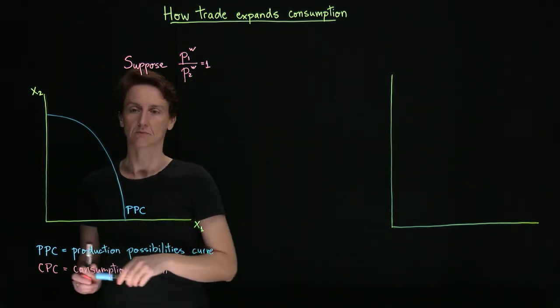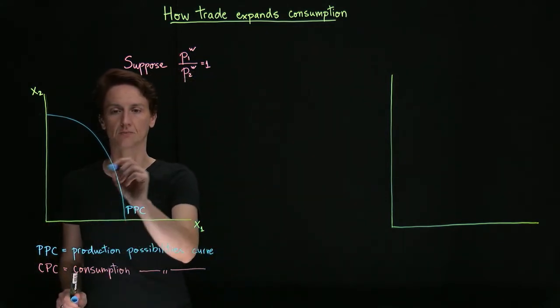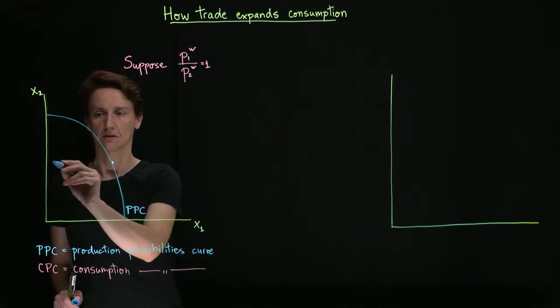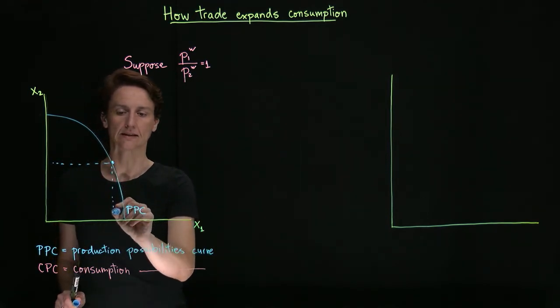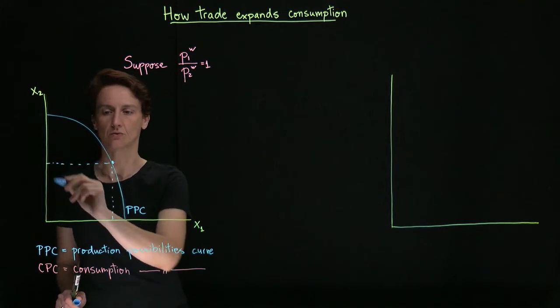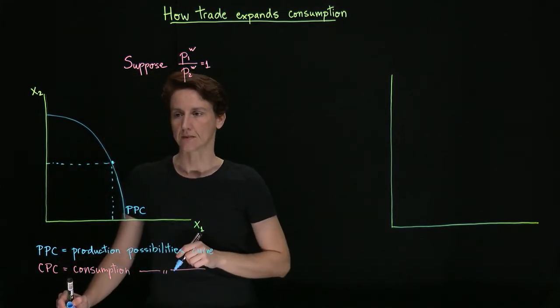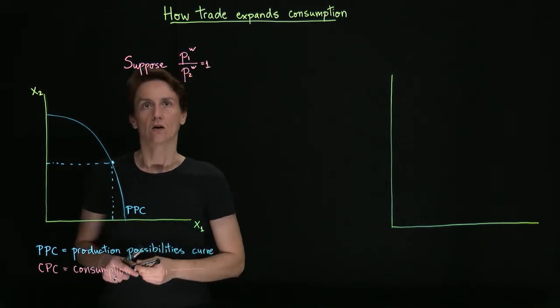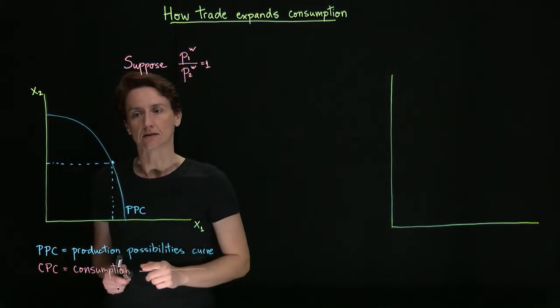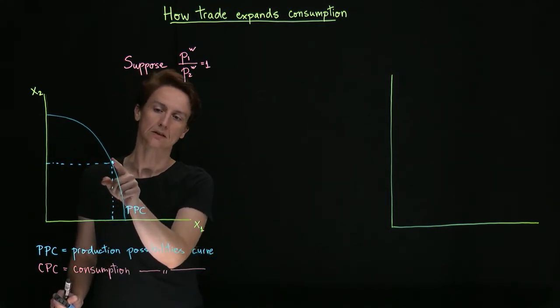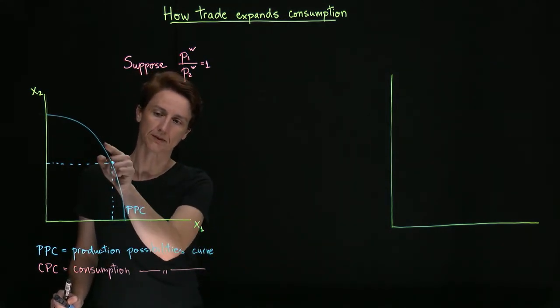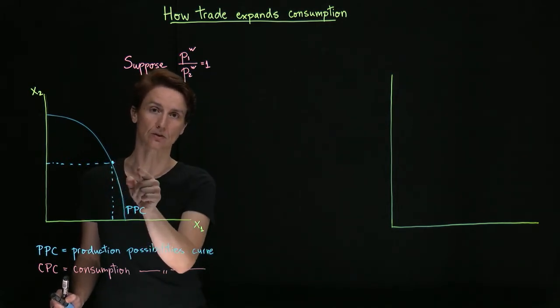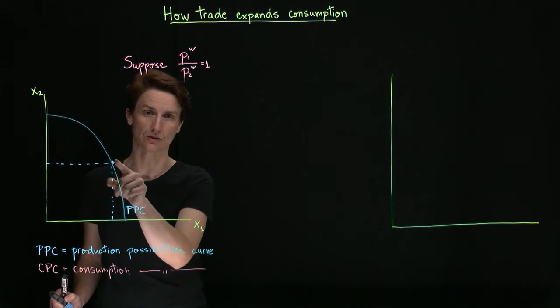Suppose that before there was access to trade, production in this country occurred at this point, which would indicate that roughly equal amounts were made of the two goods. Now access to trade is opened. What that tells us is that aside from the option of moving along PPC from this point, suppose that they decide that actually they would like to consume some more of good one than just this amount.